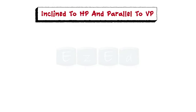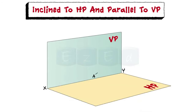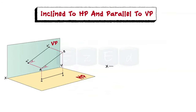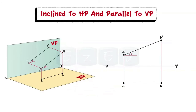Let us see a line which is inclined to HP and parallel to VP. For this case, line AB is inclined with respect to HP but it is parallel to VP, and its representation is as shown along with its orthographic pattern. In this case, the front view is inclined to line XY and shows the true length of AB, while the top view is parallel to line XY.